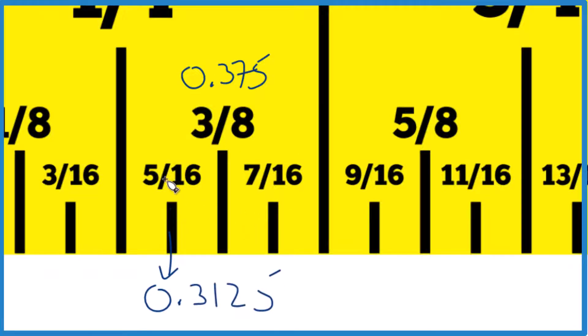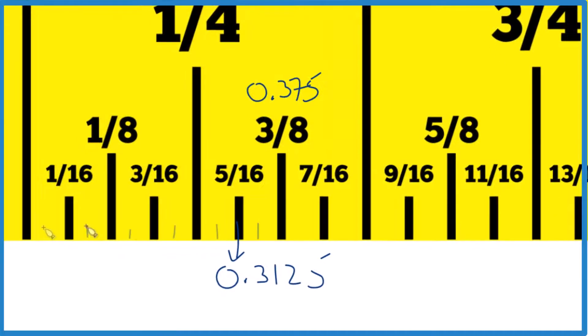We can break these down further into thirty-seconds. If we count them up, we get one, two... ten, eleven. So we have eleven thirty-seconds.